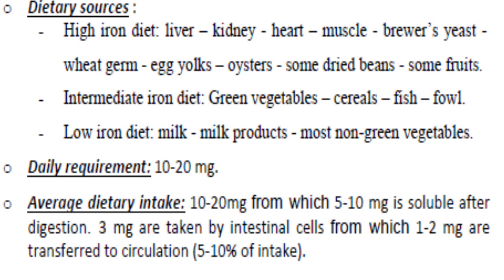Iron is present in smaller quantities in green vegetables, cereals, fish, and fowl, and in very small quantities in milk, milk products, and non-green vegetables. We need about 10 to 20 milligrams of iron per day, which roughly equals the average dietary intake. Only about 10% of this amount is absorbed, which may decrease or increase slightly depending on the body's need for iron.